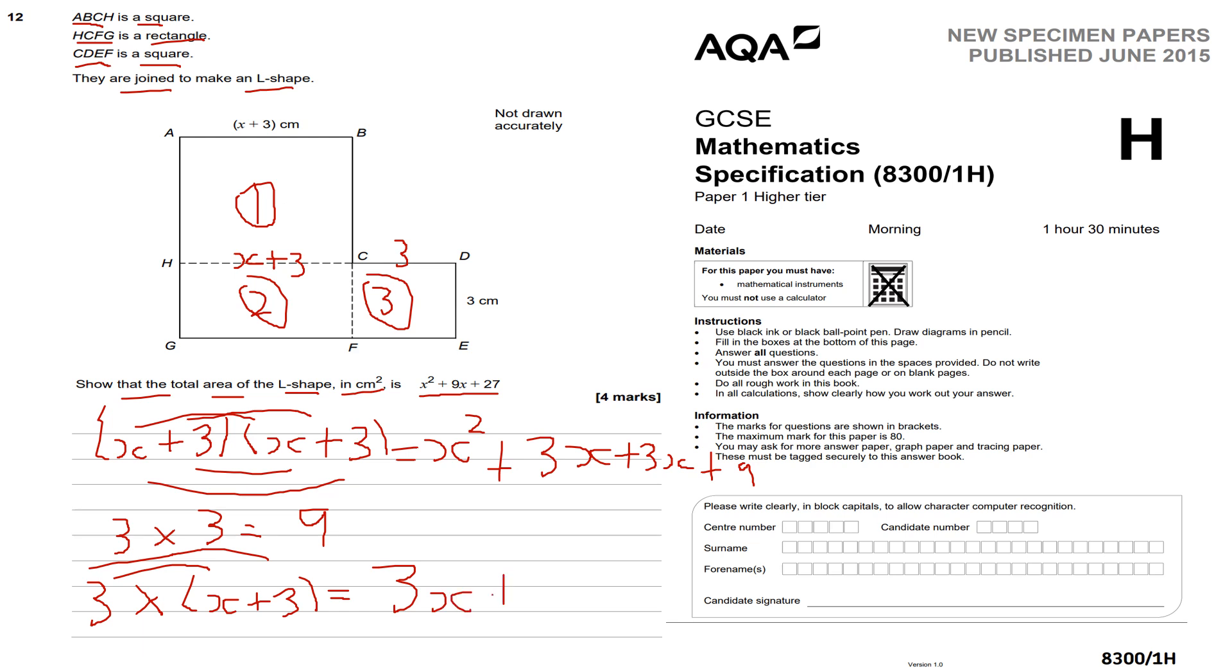Now our final part is to collect all the terms together to work out the total area of the shape. We're going to have x squared, then we've got 3x plus 3x plus 3x, which is plus 9x. Then we've got 9 plus 9 plus 9, which is 27. So our final answer - the quadratic expression for the area of this L-shape - is x squared plus 9x plus 27, as required. That's how we solve this area problem for a compound shape.